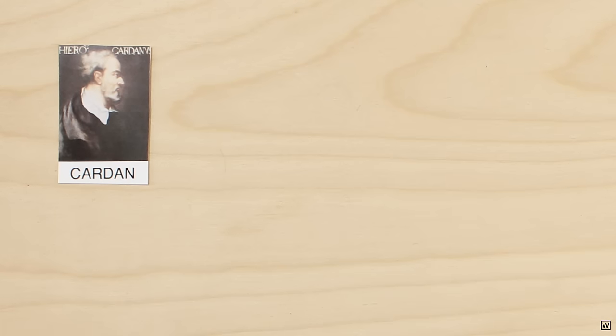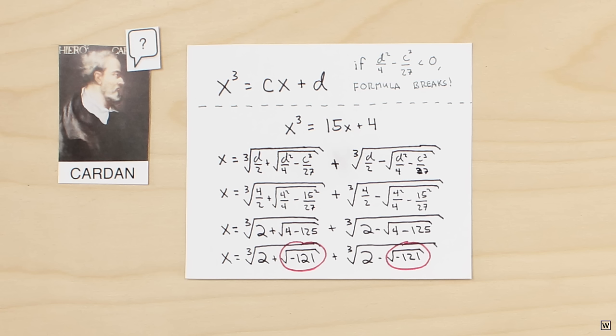We left off last time with Cardan and his broken formula for finding the roots of cubic functions. Cardan knew that his problem had to have a solution, but didn't know what to do with the square roots of negative numbers that kept popping up in his equations.